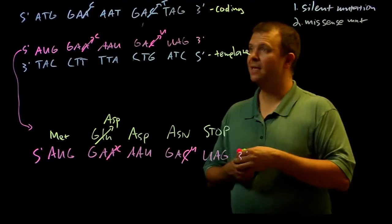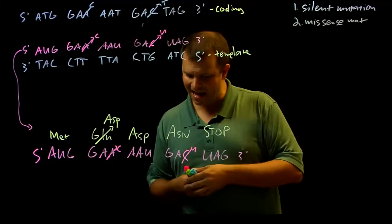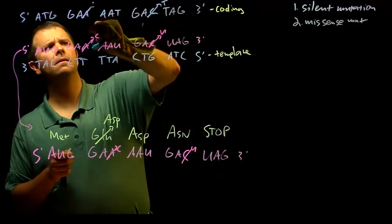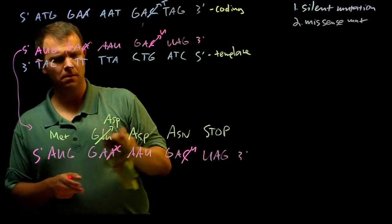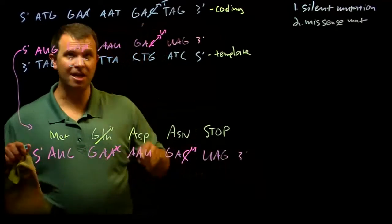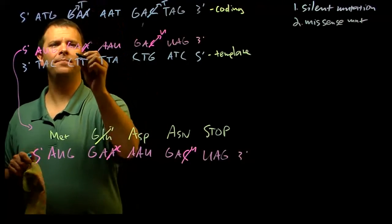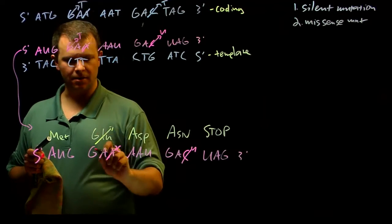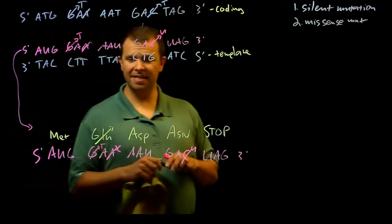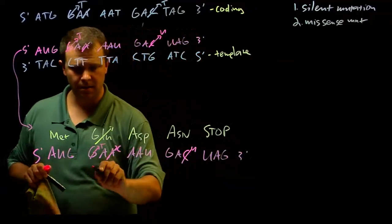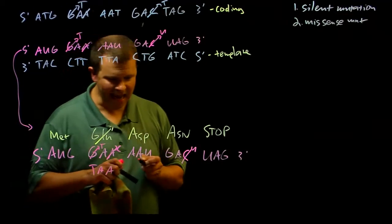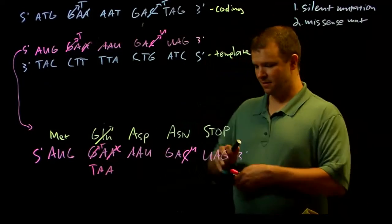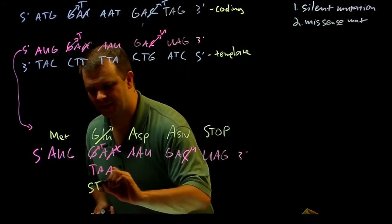Third, if I were to take GAA and instead of changing it to GAC, let's go ahead and change it to TAA. Now my codon changes. TAA is not an amino acid codon, TAA is another stop codon.